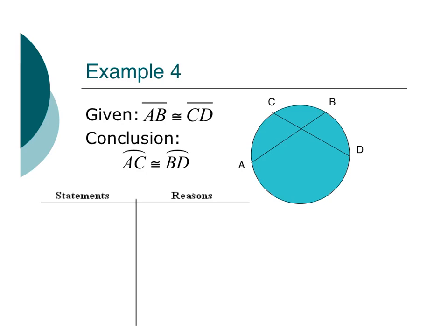Let's take a look at this first proof. I'm given that AB and CD are congruent. So those are two chords that are congruent. And I want to prove that AC and BD are congruent. Hmm, okay. I have an idea.